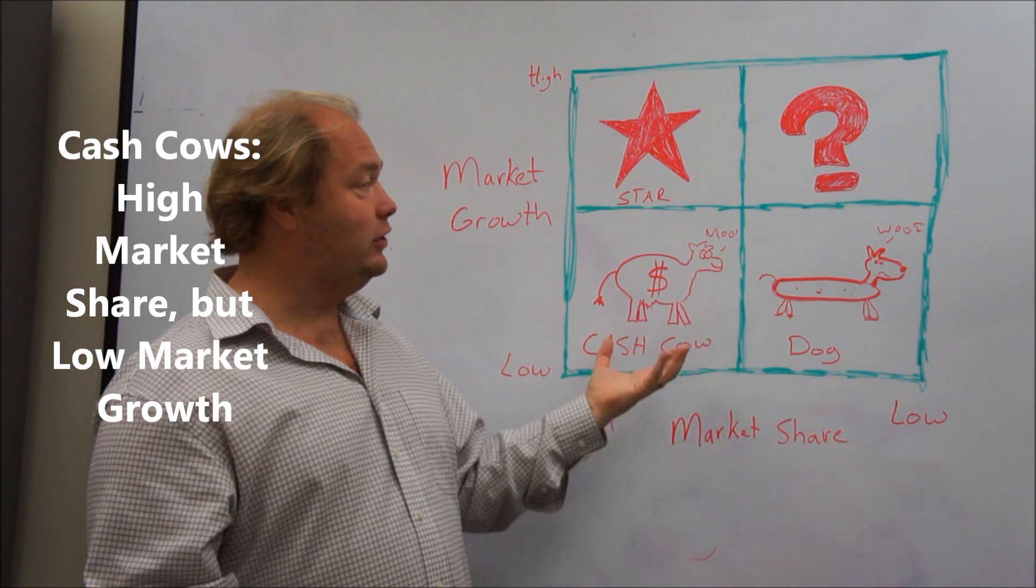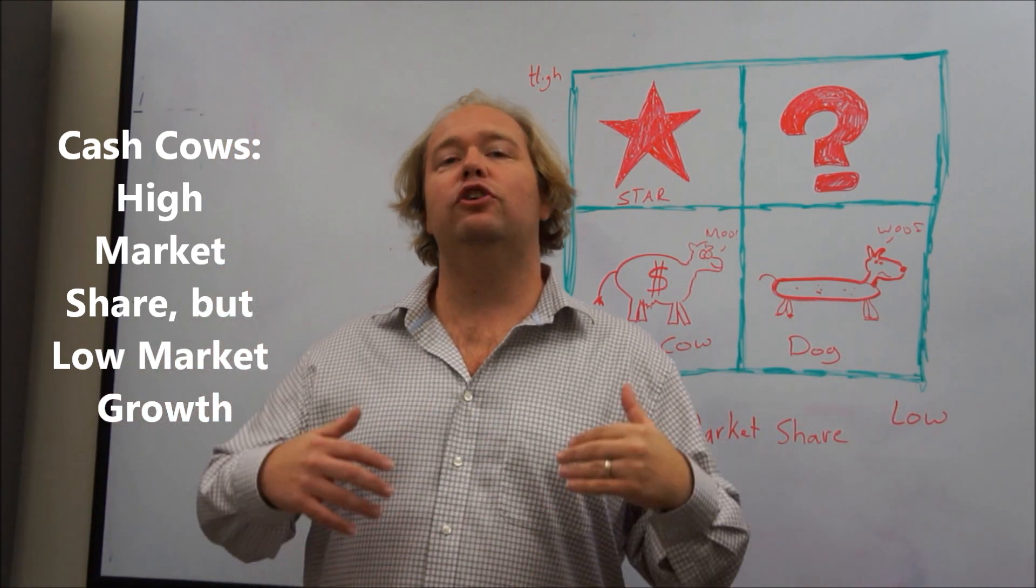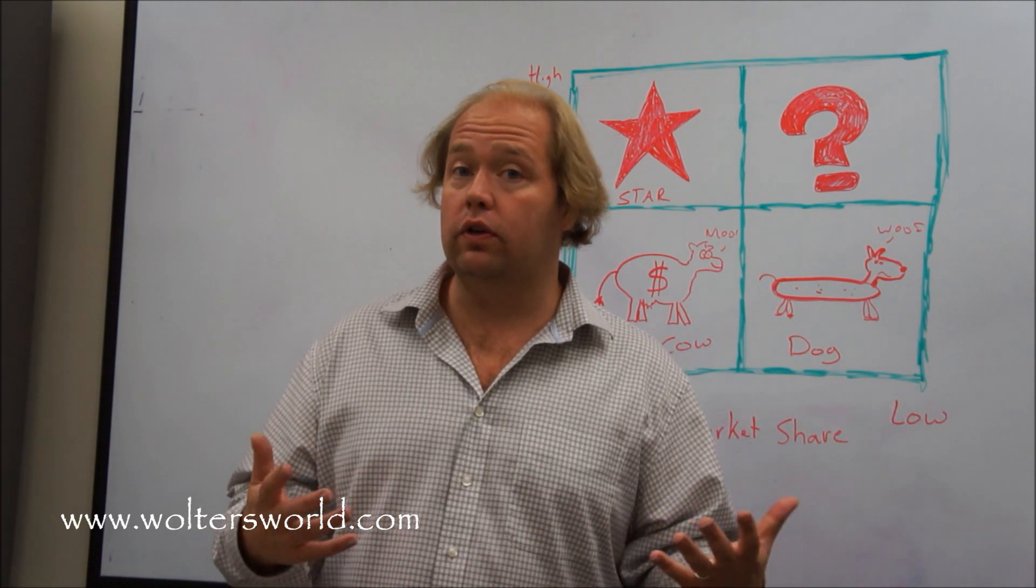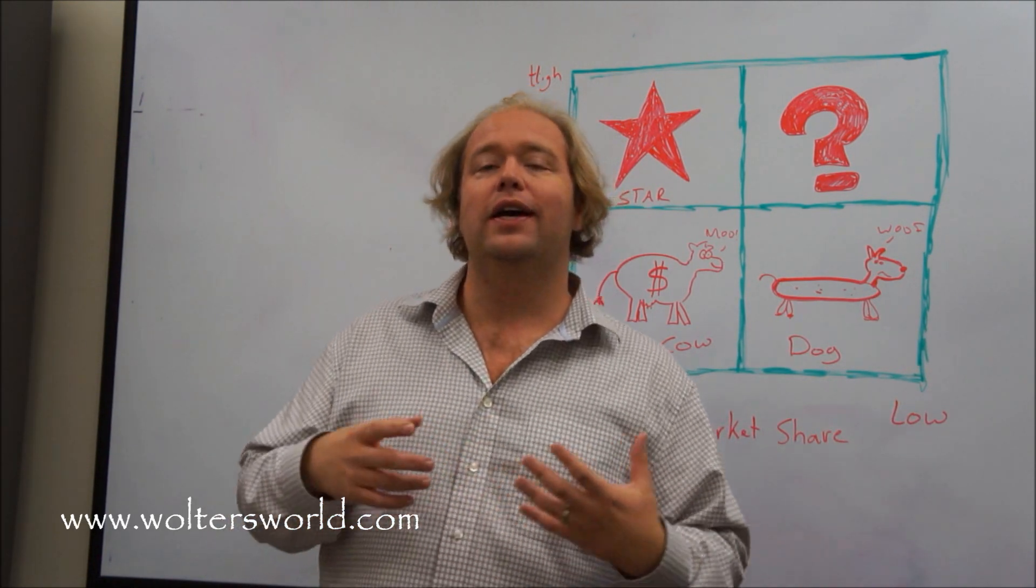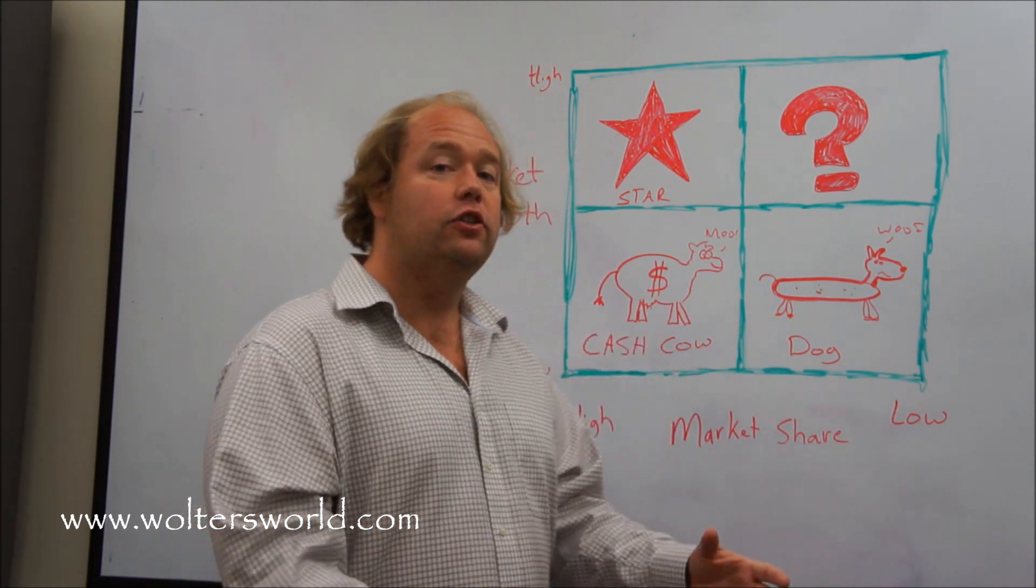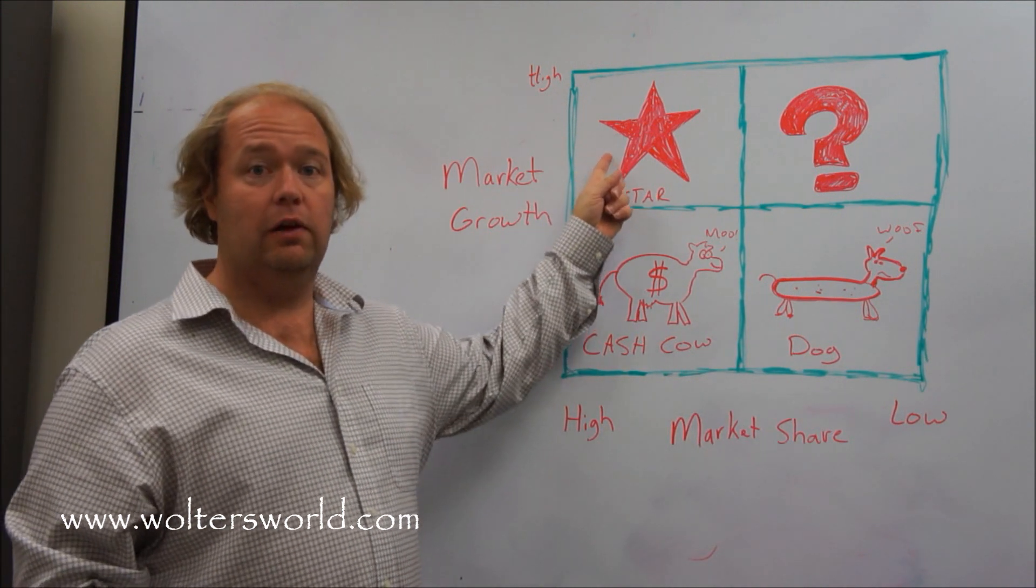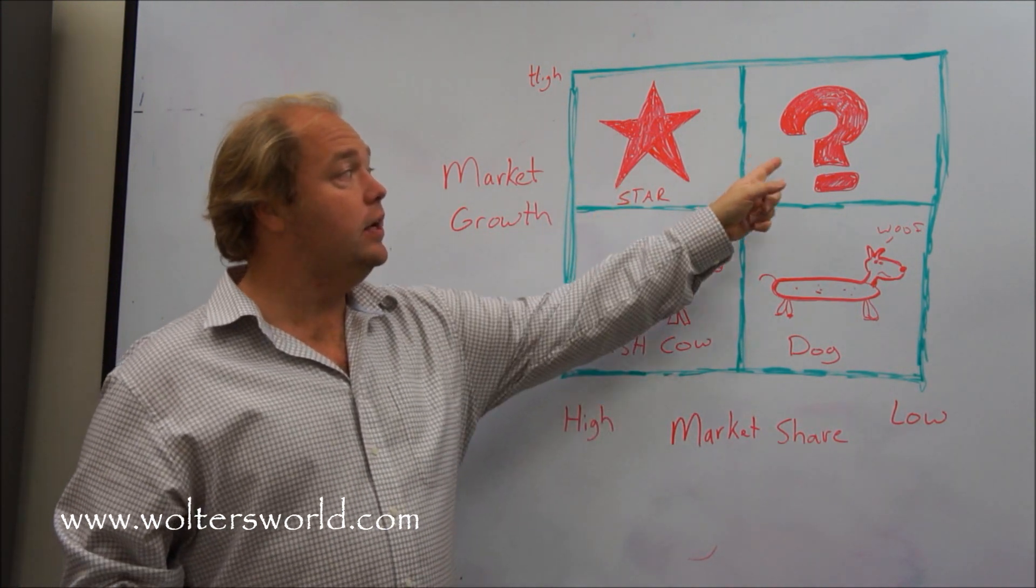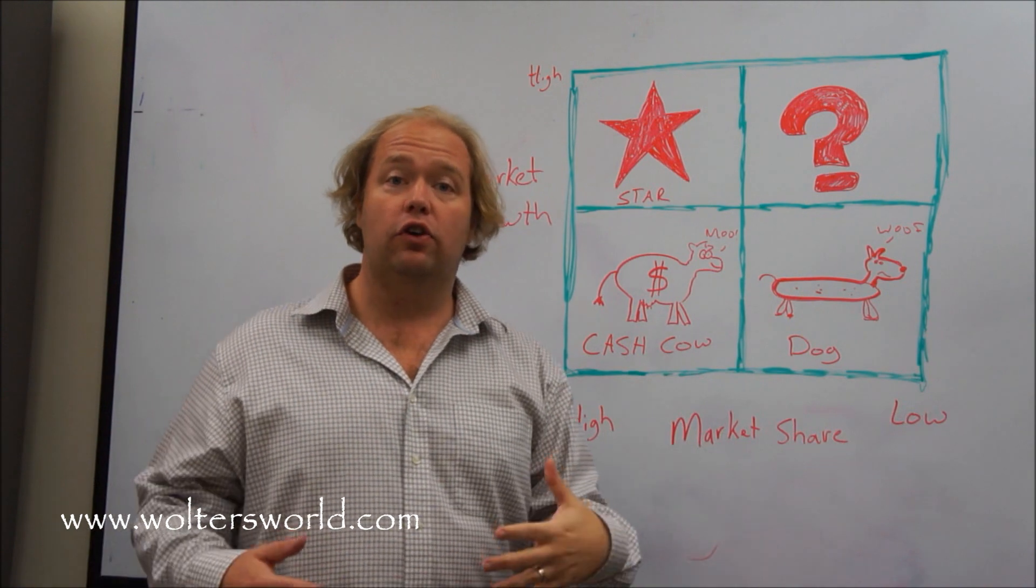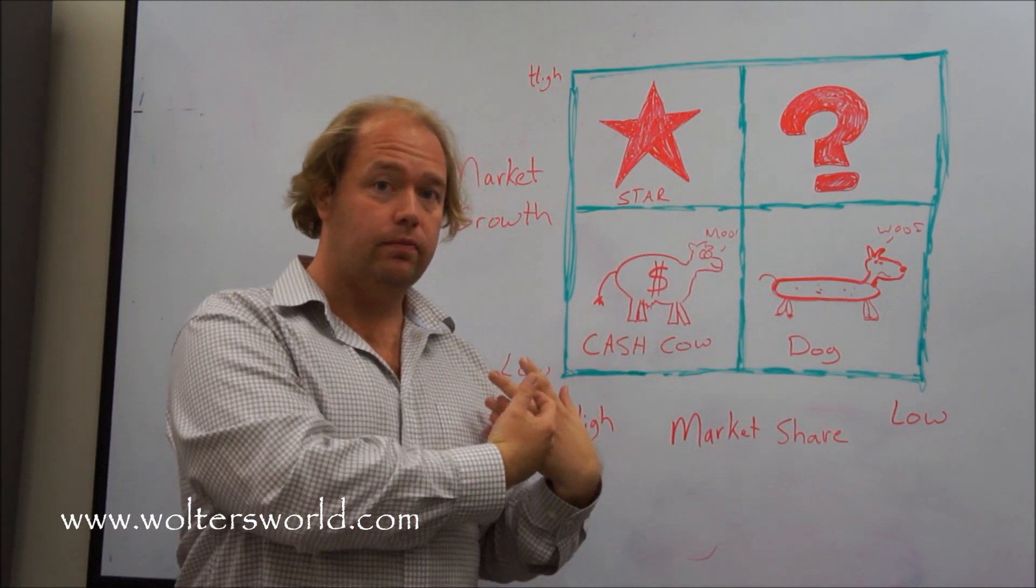Because a cash cow, this is a product that's in a low growth industry, but you're just a big time market player in it. If you're thinking of Coca-Cola Classic, the red can of Coke, not a big market growth thing there. But they make tons of cash on it, so they can use the money from their cash cow to invest in their stars, to help them make even more money, also to invest in their question marks, so maybe that extra money can help that question mark become a bigger player.